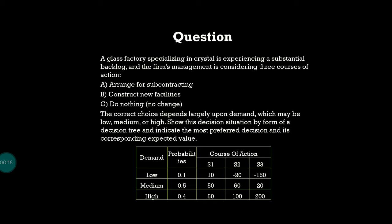The firm's management is considering three courses of action: arrange for subcontracting, construct new facility, or do nothing. The correct choice depends largely upon demand which may be low, medium, or high.